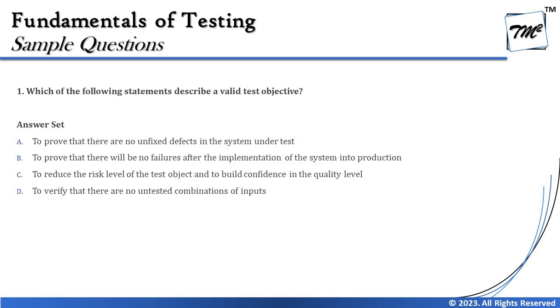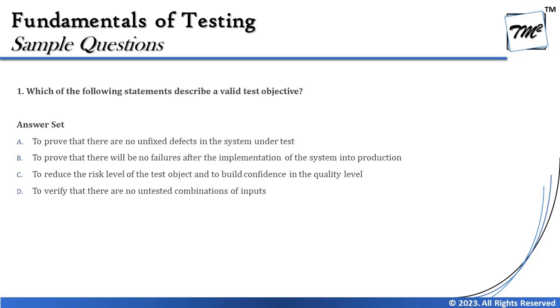Option C says: to reduce the risk level of the test object and to build confidence in the quality level. That certainly is one of the key objectives we have discussed. As part of testing, we first have the risk identification process, which helps us identify risk areas, and then a proportionate amount of testing is conducted to mitigate those risks and gain confidence about the quality of the product.